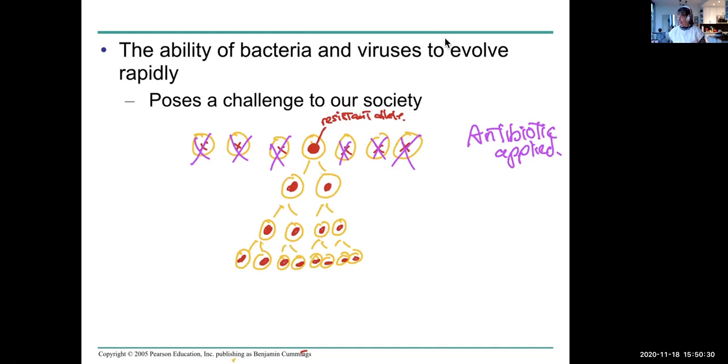So I'm simplifying it a little bit because bacteria have many different alleles, some which may confer a little bit of resistance, some which may confer a lot of resistance. And that's why when you get antibiotics for a bacterial infection, you have to take the entire dose because you really want to get rid of all of the bacteria, any that are a little bit resistant.